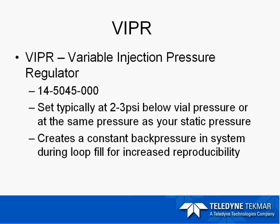Another feature that the 7000 has is called a VIPER, a variable injection pressure regulator. It is typically placed on the outlet vent on the rear of the unit and is typically set at 2 to 3 PSI below the vial pressure. This creates constant back pressure in the system during loop fill for increased reproducibility. You will want to press 3 on the keypad when in standby ready mode, then press 3 for vent check. Place an empty vial in the carousel, and once the vial is up on the needle, adjust the pressure knob on the front gauge of the VIPER, which is plumbed into the vent outlet of the rear of your 7000.